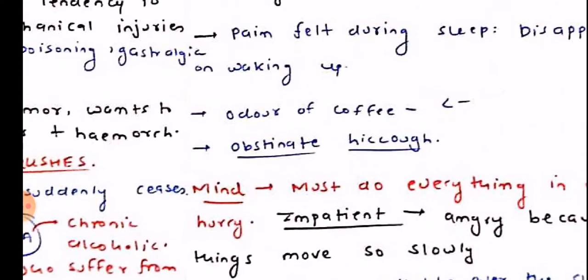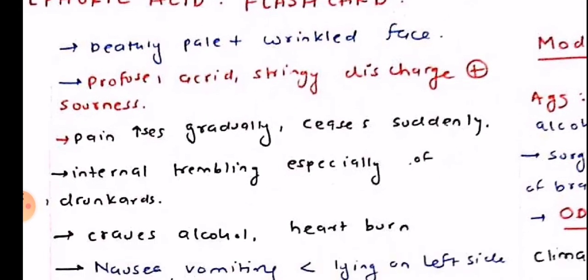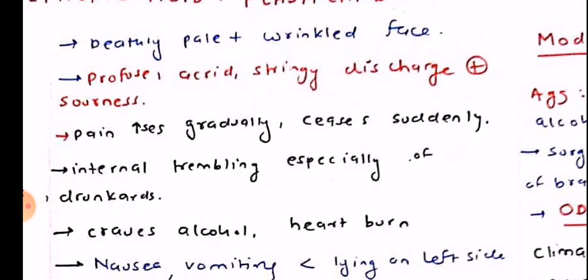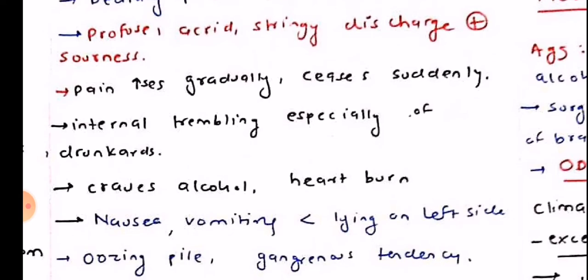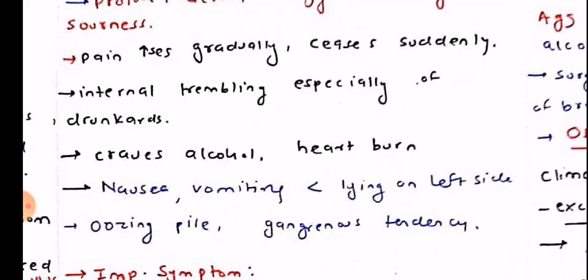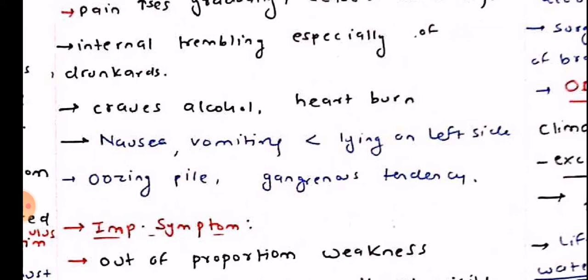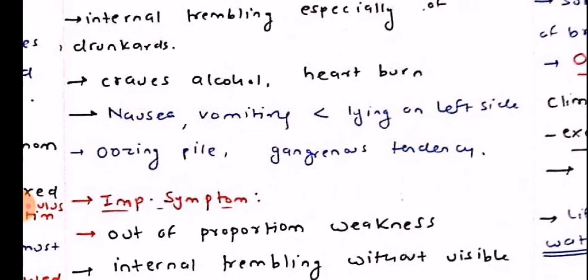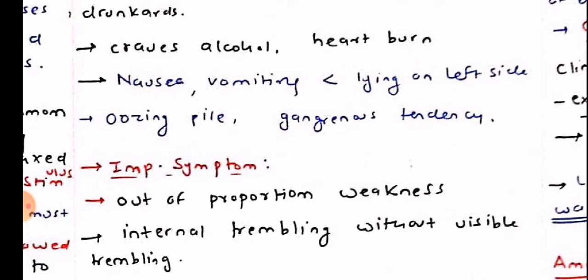There is weakness which is out of proportion to the disease, generally seen in the acid group — deathly pale plus wrinkled face, profuse acrid stringy discharge plus sourness, pain increases gradually and ceases suddenly. Internal trembling especially in drunkards; patients crave alcohol and as a result there is heartburn, nausea, and vomiting which is aggravated by lying on the left side. Oozing piles with a gangrenous tendency are generally found in Sulphuric acid patients.